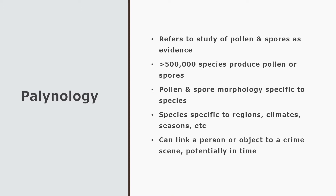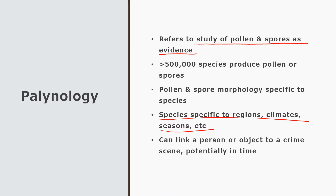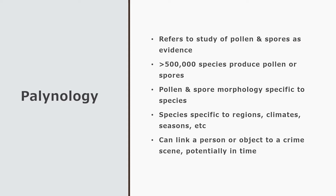Forensic palynology refers to the study of pollen and spores as evidence. It doesn't seem like pollen and spores would be useful at most crime scenes, but pollen is everywhere and spores are everywhere — they are on surfaces and in the air. They can be very specific to regions, climates, and seasons. You can have a certain species of tree that lives in the Pacific Northwest and releases pollen only there. Characterizing pollen can go a long way towards linking a person or object to a crime scene.